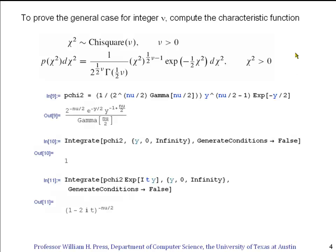But now I have to prove the theorem for the general integer case ν. The easiest way to do this is to compute the characteristic function of the chi-square distribution. So let's do that. Here we have the same chi-square distribution again.